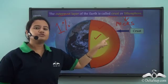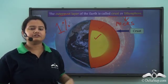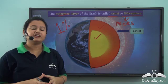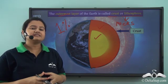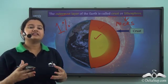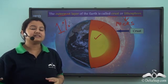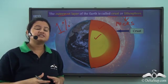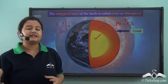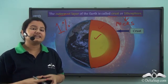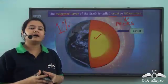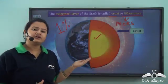The outermost layer of the Earth — the crust or lithosphere — supports life. The plants growing on land, the animals roaming on land, and even the fishes living in oceans are all part of the lithosphere.